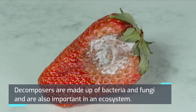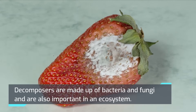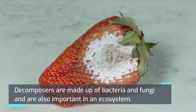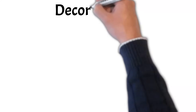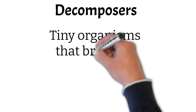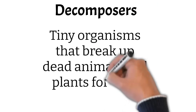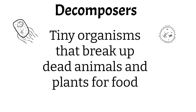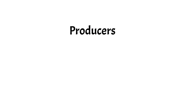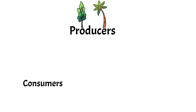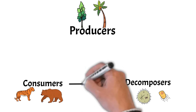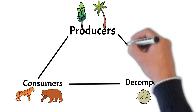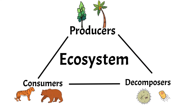Decomposers are made up of bacteria and fungi and are also important in an ecosystem. They're tiny organisms that break up dead animals and plants for food. Producers, consumers, and decomposers are all part of an ecosystem where they depend on each other to transfer energy and survive.